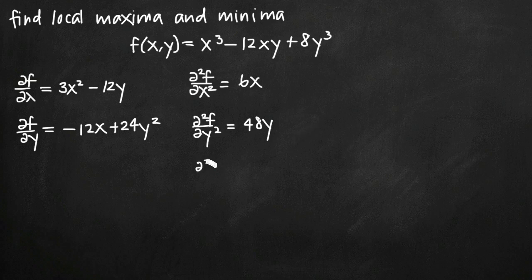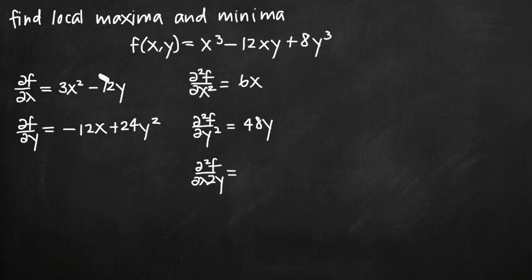For the mixed second-order partial derivative fxy, we start with the first-order partial derivative with respect to x and take the partial derivative of that with respect to y. The 3x squared term drops away because there's no y variable, and we're left with negative 12.